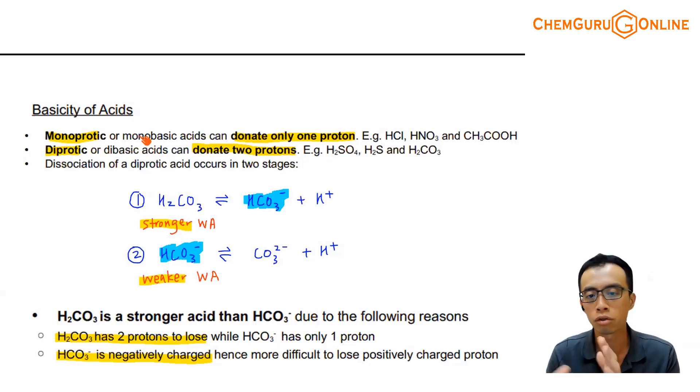The basicity and the strength are not that related to each other. You notice the examples that we have. For monoprotec acids, we have examples of strong acid like HCl and HNO3. We also have examples of weak acid that are monoprotec, like CH3COOH. Similarly, for diprotec acids, we have examples for strong acid and weak acid. H2SO4 is counted as a strong acid. H2CO3 is counted as a weak acid, carbonic acid.